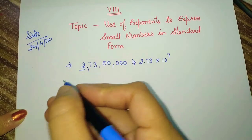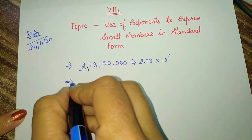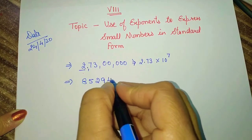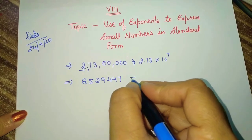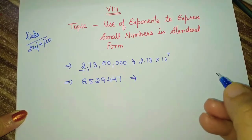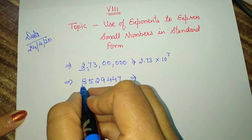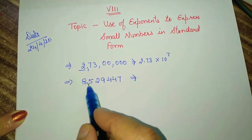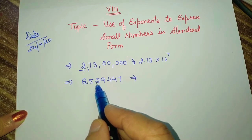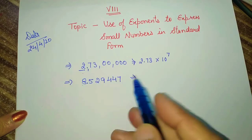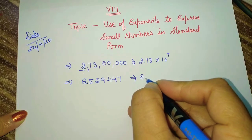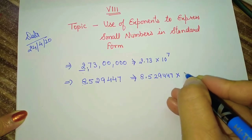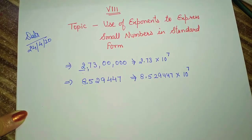One more example. For example, we have the number 8529447, and we have to write this number in standard form. According to the rule, take the first digit and after the first digit put the decimal. After the decimal, count the number of digits: 1, 2, 3, 4, 5, 6. So we can write 8.529447 × 10 raised to the power 6.